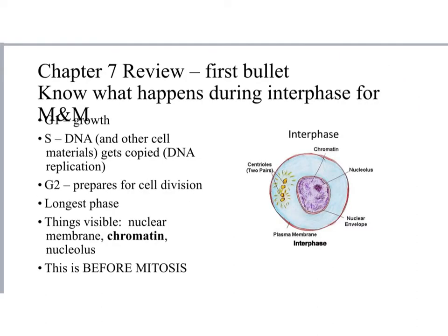The first topic for chapter 7 is interphase, which occurs before mitosis and meiosis. There are three parts: G1, where the cell is growing; S, where DNA is being replicated along with all other cell materials; and G2, where the cell prepares for cell division. From our lab, we know interphase is the longest phase. You should see chromatin, the nuclear membrane or nuclear envelope, and the nucleolus during interphase.